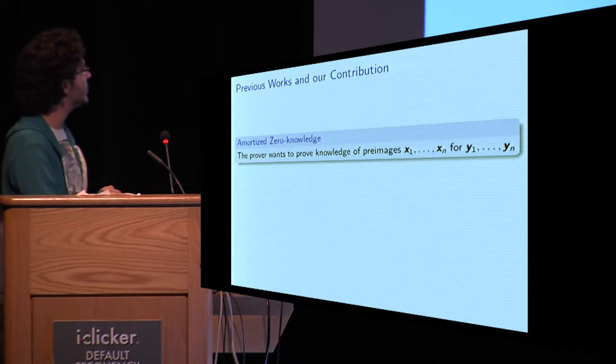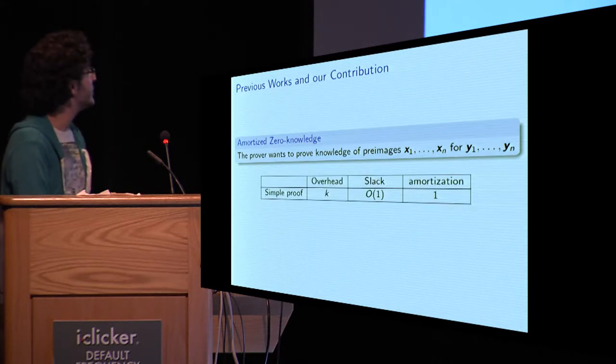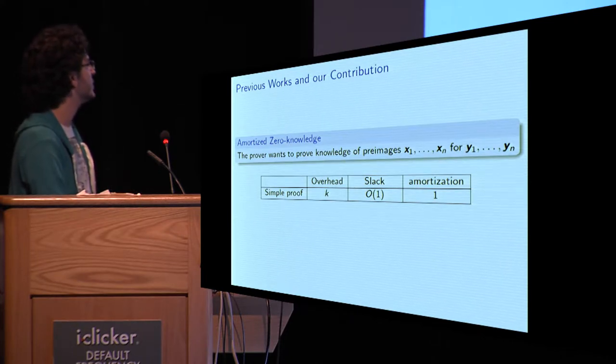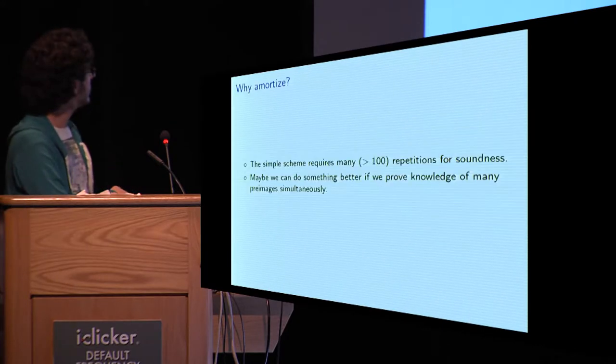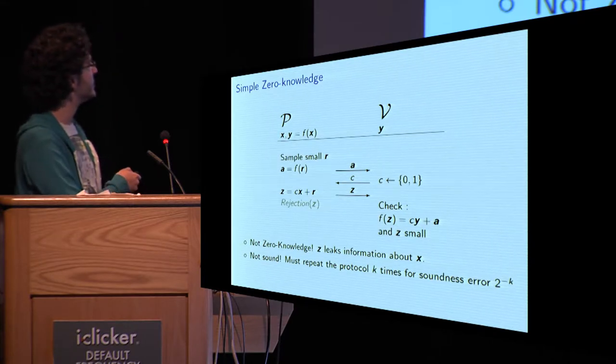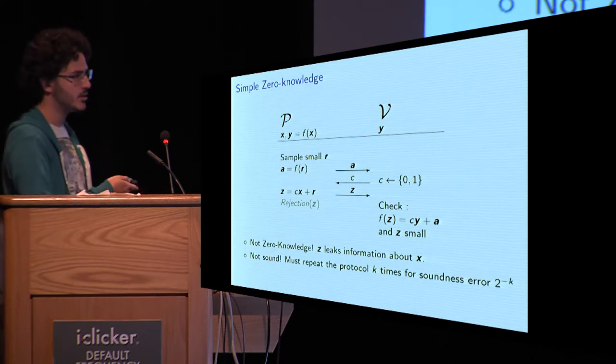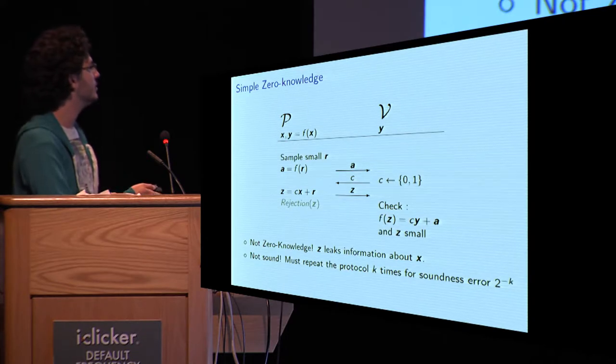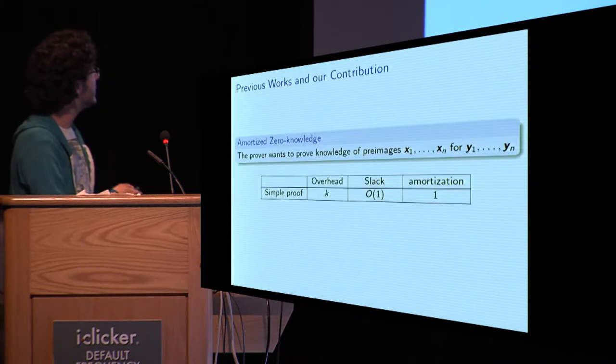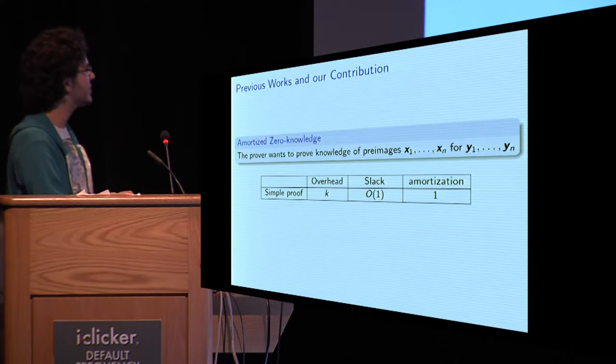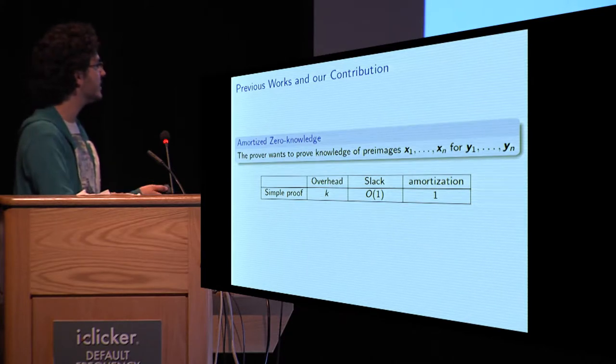So now the new context is that the prover wants to prove knowledge of y1 up to yn. As we have seen, we can do this with this simple proof, in which we will have an overhead linear in the security parameter. Slack, what we call slack, is the difference between the size of Z and the size of X. So here the slack is constant, at least in the parameter k. And amortization for the simple proof is basically one, since we only need one equation.